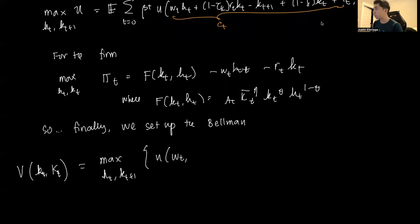Wt Ht plus 1 minus tau K, Rt Kt plus tau T, plus Tt minus Kt plus 1, plus 1 minus delta Kt, 1 minus Ht, plus beta expected value, the continuation value of the function, which is Kt plus 1, Kt plus 1.